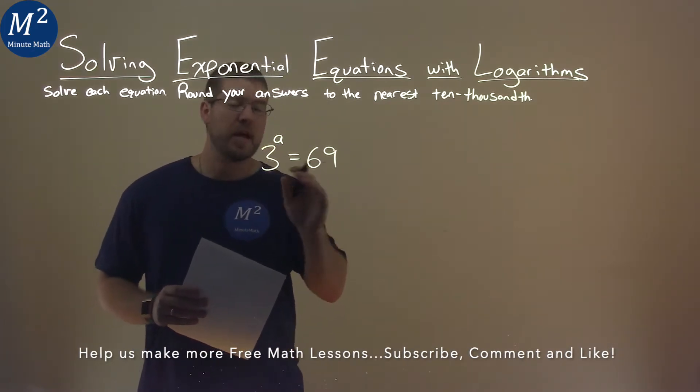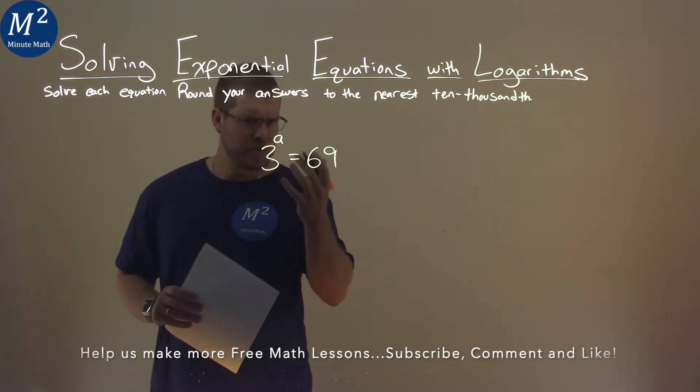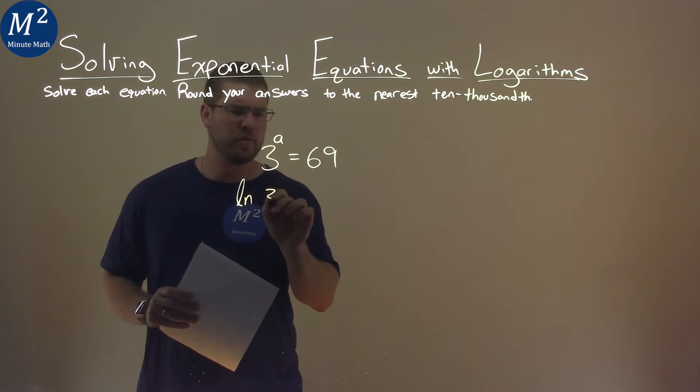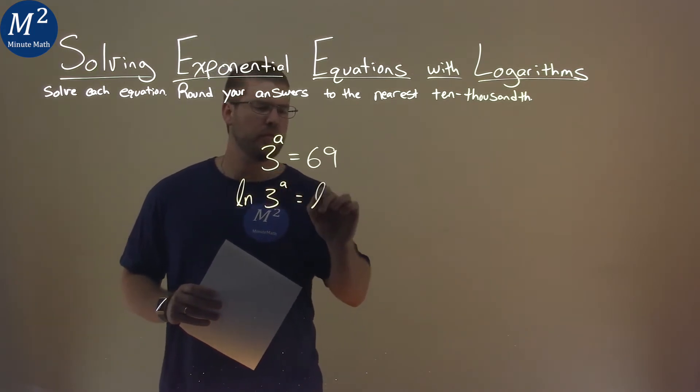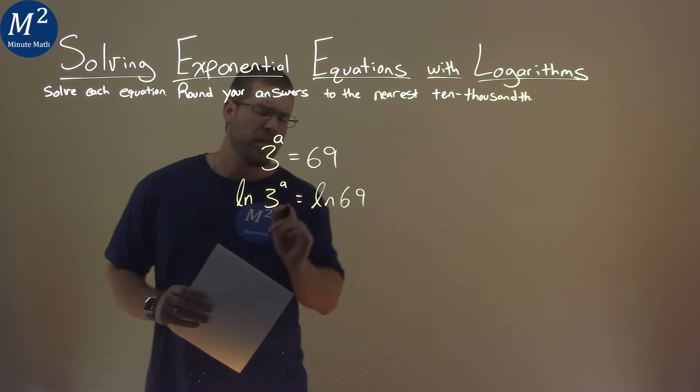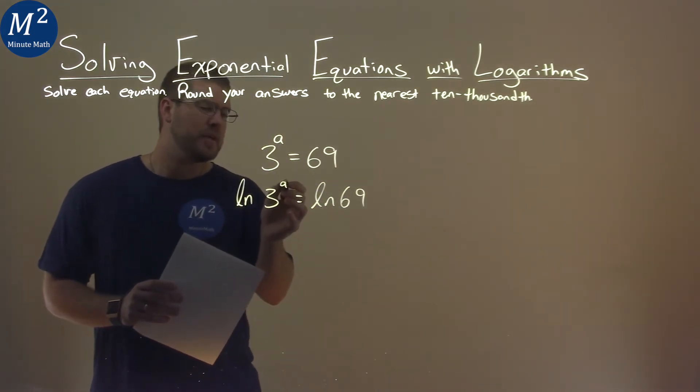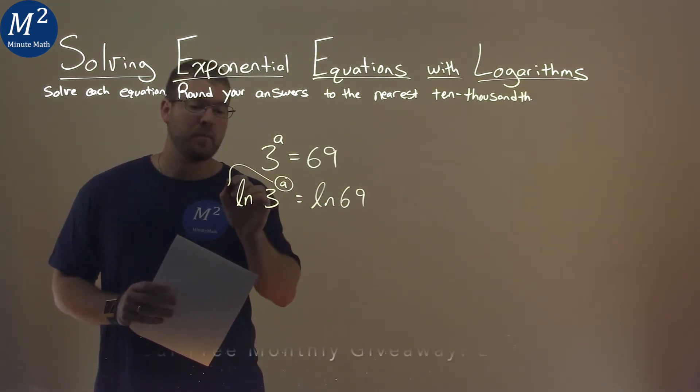We know that I can take the natural log of both sides of an equation here. So if we do that, natural log of 3 to the power of a is equal to natural log of 69. This allows us now to take this exponent of a and bring it out front.